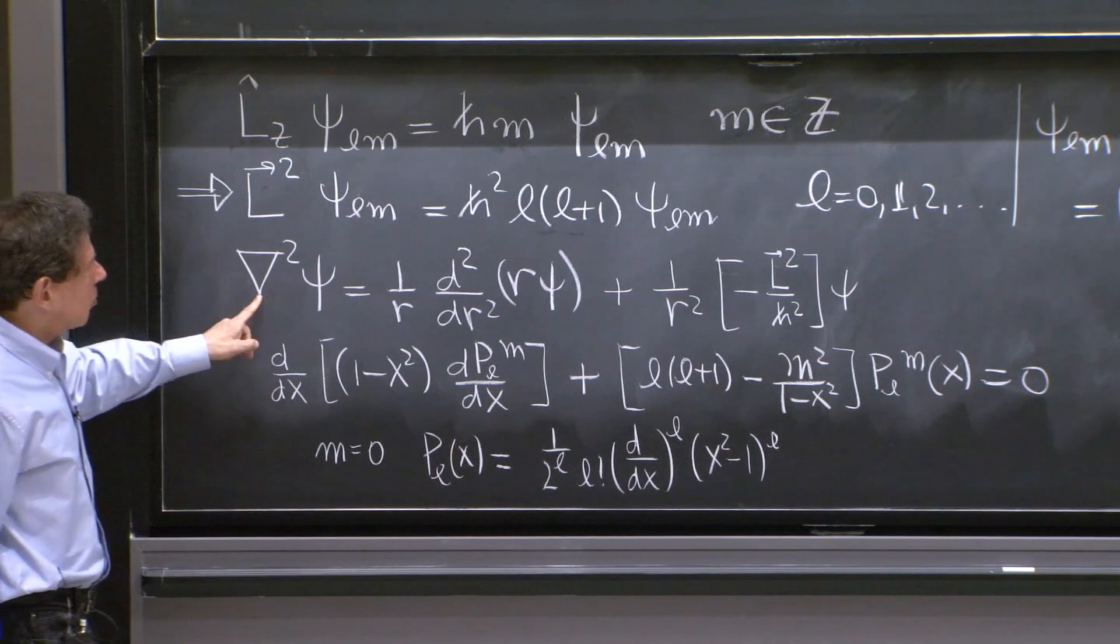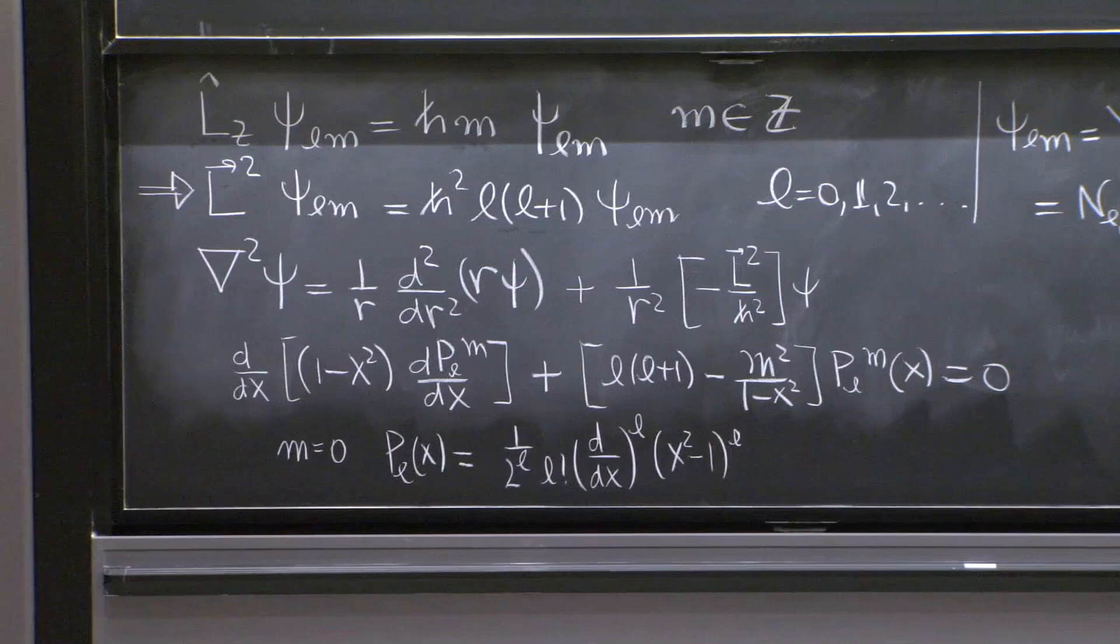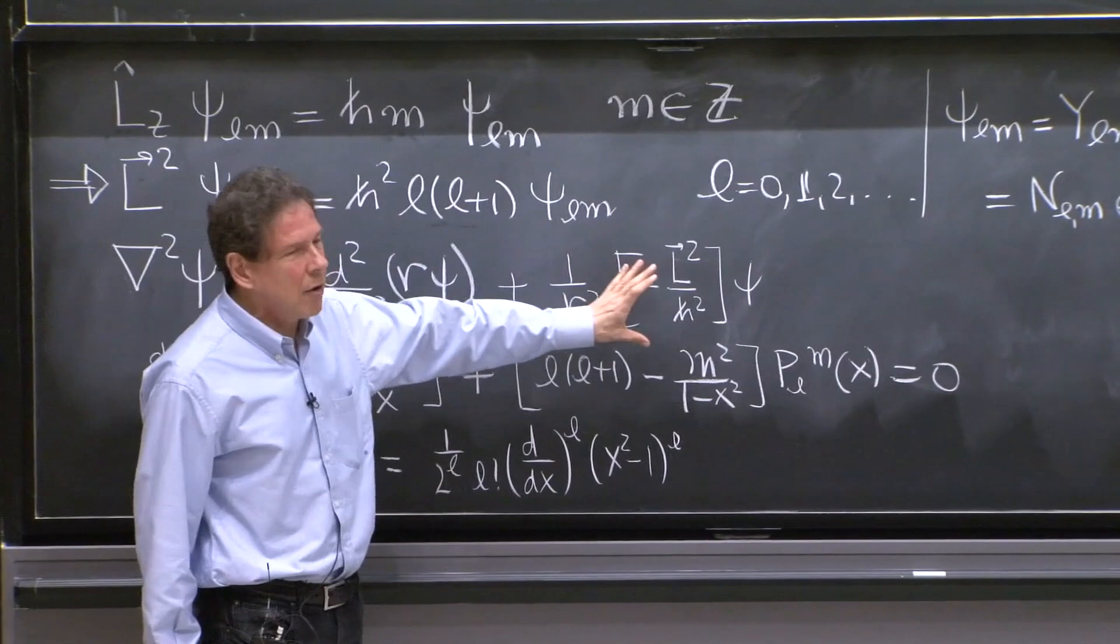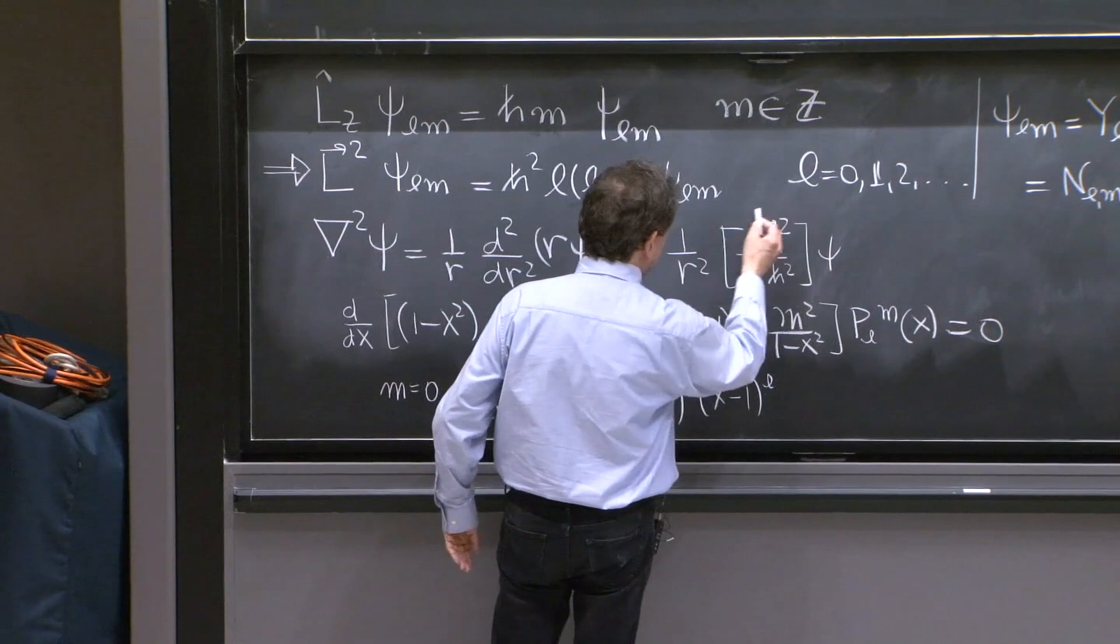Because Laplacian, as was written in the previous lecture, Laplacian entering in the Schrodinger equation has a radial part and an angular part, where you had d d thetas and sine thetas and d second d phi squared. All these things were taken care by L squared. And that's very useful.